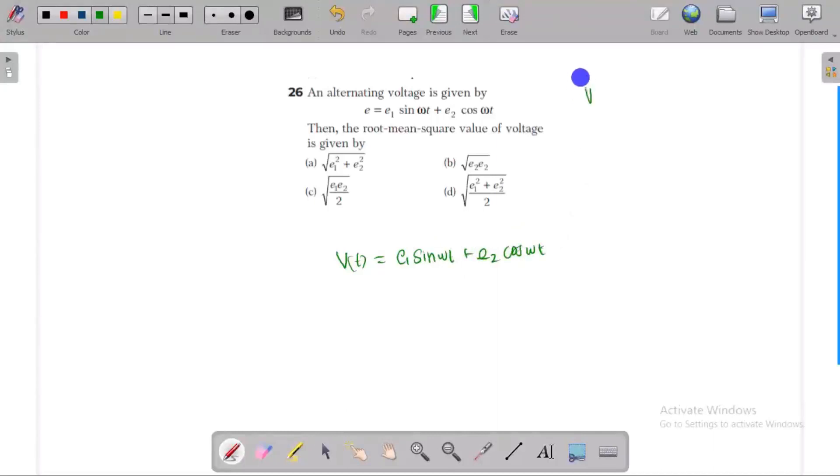In the normal form, V of T is equal to Vm sin omega t. This is the normal form. Now, we will convert it to sin omega t form.